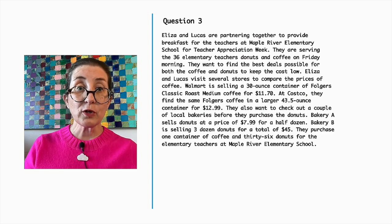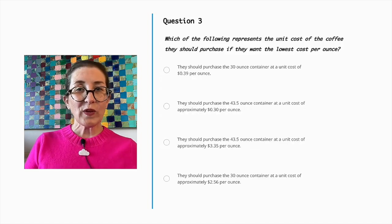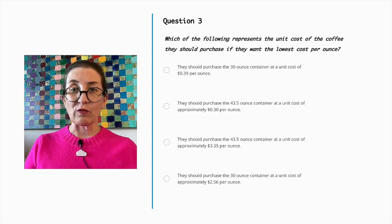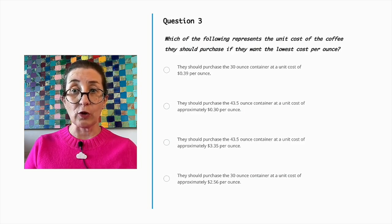They purchase one container of coffee and 36 donuts for the elementary teachers at Maple River Elementary School. Which of the following represents the unit cost of the coffee they should purchase if they want the lowest cost per ounce?